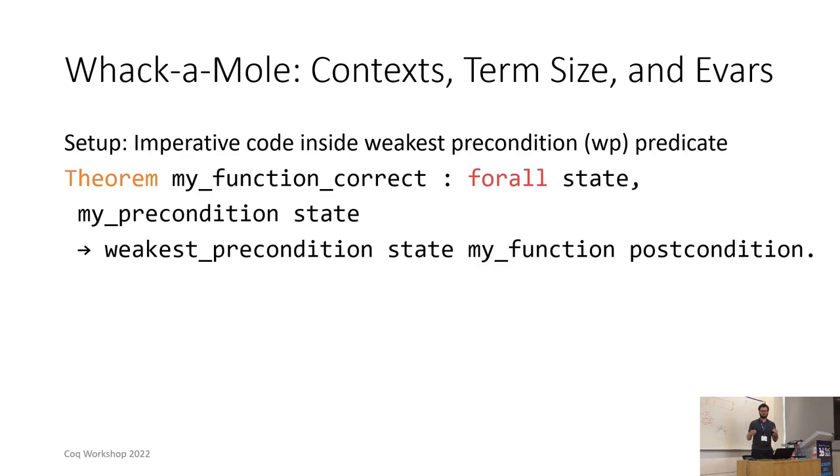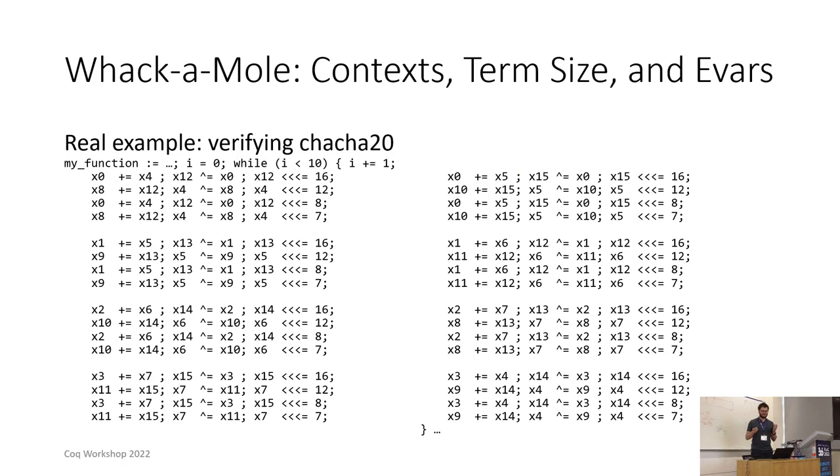We've seen one more or less concrete instance where solving one performance problem just uncovers another one and I hope that this next example will give more of a sense of the super linear whack-a-mole. The setup here is doing weakest precondition proving for imperative code verification where you have some concrete function and some precondition that you can assume about that function and a concrete post condition. The real world example that we're considering is ChaCha20 and essentially the only thing you need to know about ChaCha20 is that it is largely a single loop that has 96 assignments. The other thing you need to know is that the variables are used multiple times and so in order to avoid super linear blow up in goal size, we need to introduce let binders for the variable values.